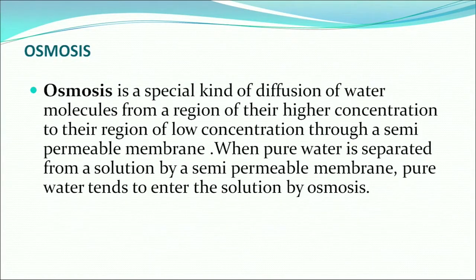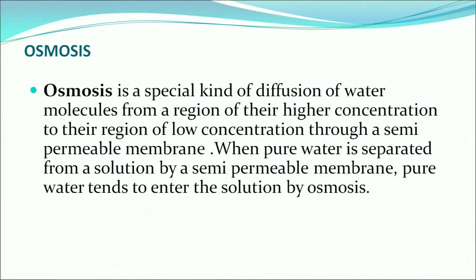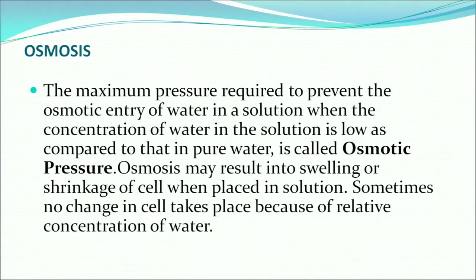Osmosis is different from diffusion because it needs a membrane. Osmosis is a special kind of diffusion of water molecules from a region of higher concentration to a region of lower concentration through a semi-permeable membrane. When pure water is separated from a solution by a semi-permeable membrane, pure water tends to enter the solution by osmosis. The maximum pressure required to prevent this osmotic entry of water is called osmotic pressure.